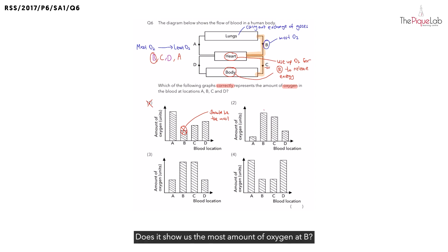What about option two? Does this show us the most amount of oxygen at B? Yes. What about option three? Option three, yes. But if you look at option three, we can see it's not just B that has the most amount of oxygen. In fact, which other location has the most amount of oxygen? We can see it is C.